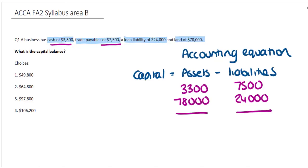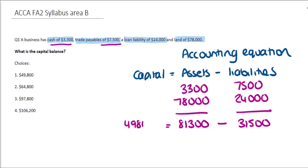Therefore, I now have totals for my assets and my liabilities. Assets equal $81,300 and liabilities equal $31,500. To complete the accounting equation and get to our capital figure, I need to take my assets and subtract my liabilities, which gives me a capital balance of $49,800. Looking at the choices available, the first option matches our calculation. Brilliant — the first option is the correct one.